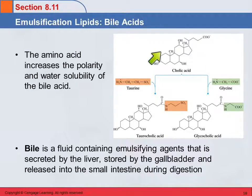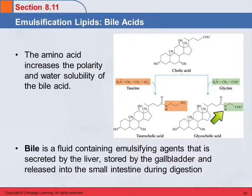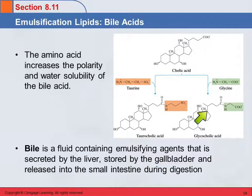Here's the cholic acid like we saw on the previous page. Amino acids come in — either taurine or glycine in this example — and they react with that carboxylate ion to form an amide. We've got an amide here and an amide there. One of the important things this does is it increases the polarity and the water solubility of the bile acid. This end is now very polar, and this other end is not very polar, so these are going to help surround the fats like soap surrounds dirt.